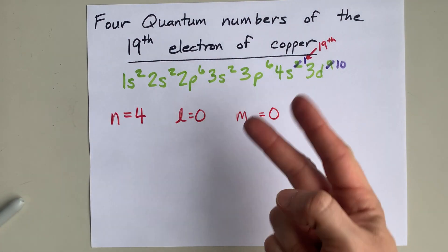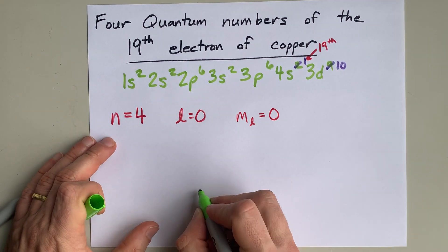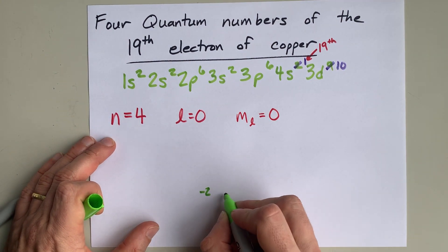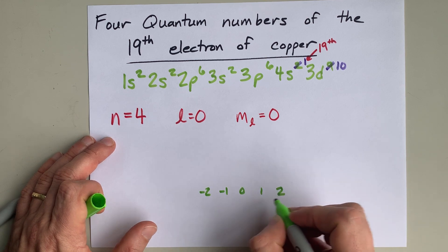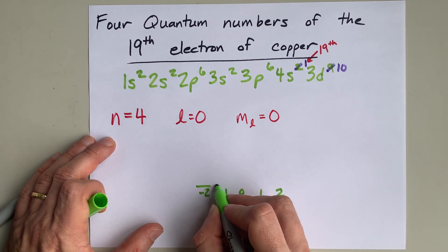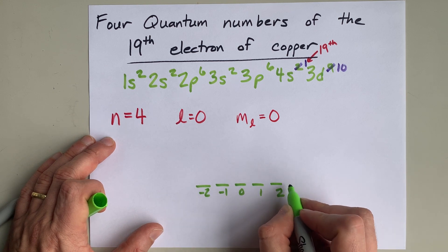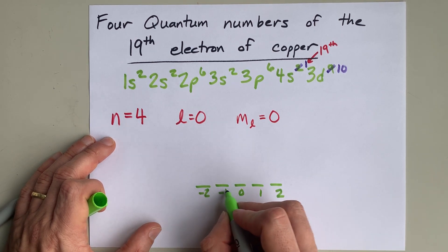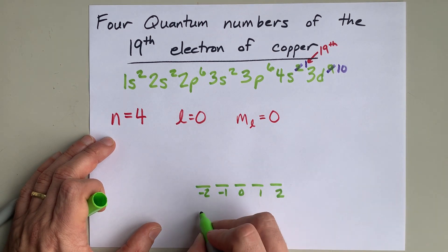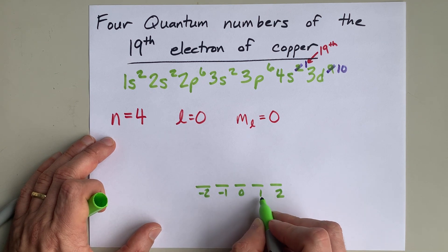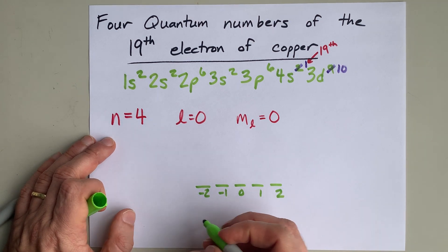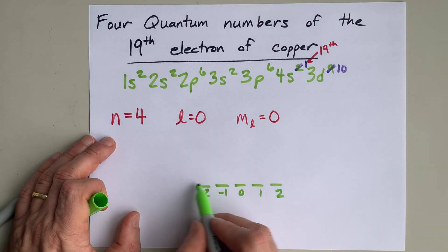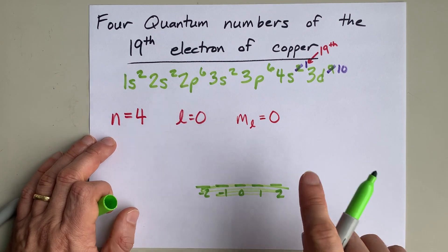I will point out that if L was equal to 2, then your choices for ML would have been negative 2, negative 1, 0, 1, and 2. And that happens to be why a D subshell can hold 10 electrons. Each of these orbitals is represented by a different ML, all in a D subshell where L equals 2. But that doesn't apply to this question.